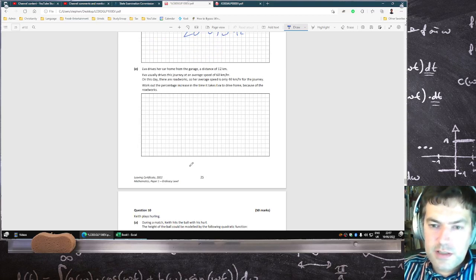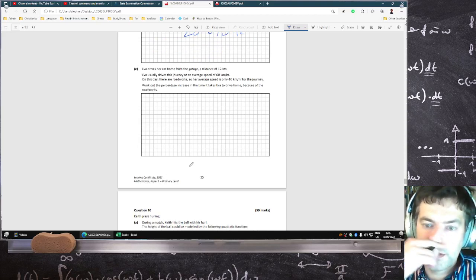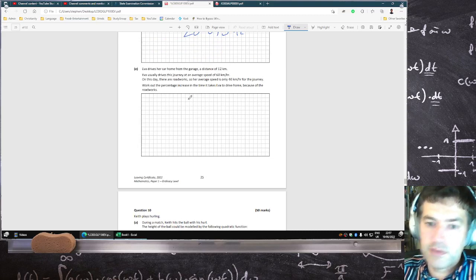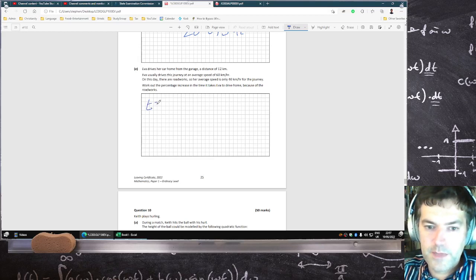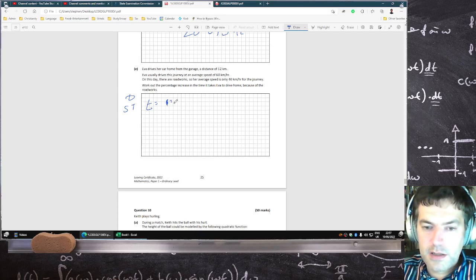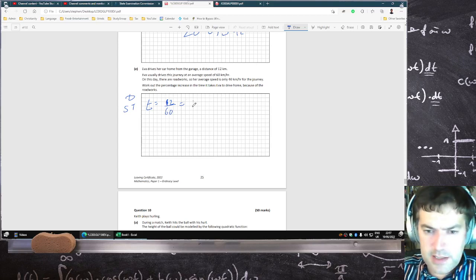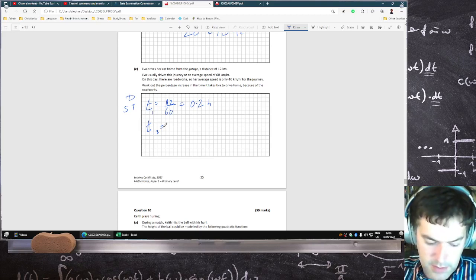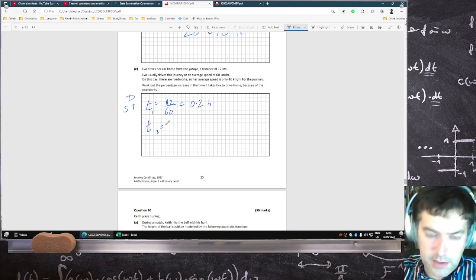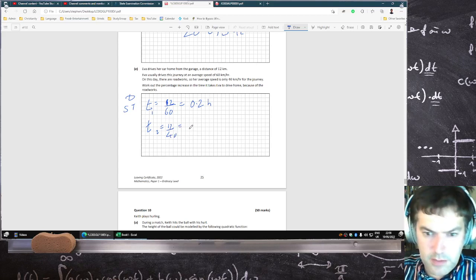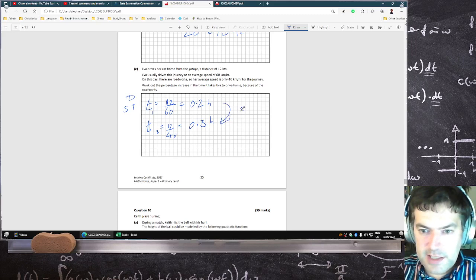Eva drives her car home from the garage. This is 12 kilometers. She drives at 60 kilometers per hour, but average speed is 40 due to roadworks. Work out the percentage increase in the time it takes. Normally the time is distance over speed, 12 over 60, that's 0.2 hours, but now with roadworks it's going to take 12 over 40, which is 0.3 hours. You can see that's an extra 50% of time.